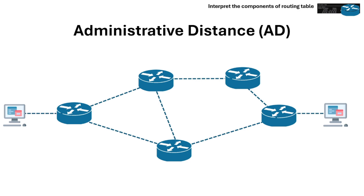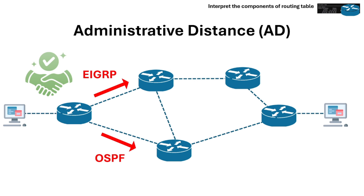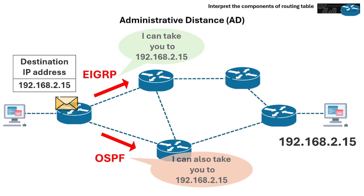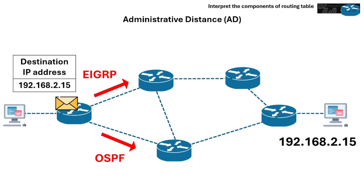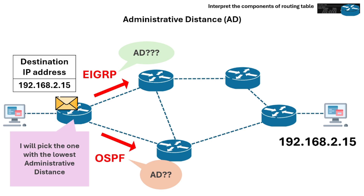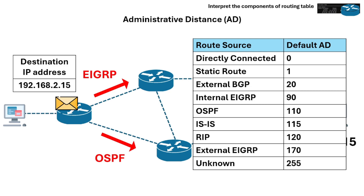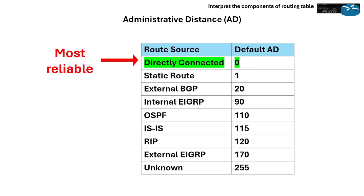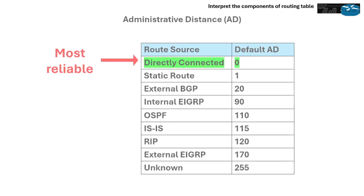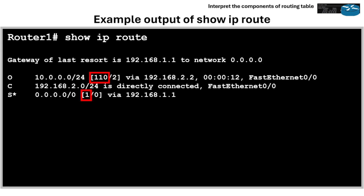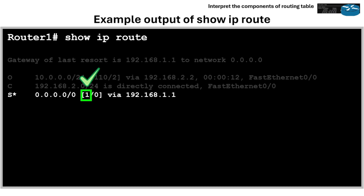Next is administrative distance, or AD. This is used by the router to determine the trustworthiness of a routing protocol when multiple protocols offer routes to the same destination. If multiple routes to the same destination exist from different sources, the router picks the one with the lowest administrative distance. The administrative distance is a local value and helps routers decide which route to install in their routing table. In this routing table example, the administrative distance is found as the first value in the brackets, and the static route would be chosen over OSPF.